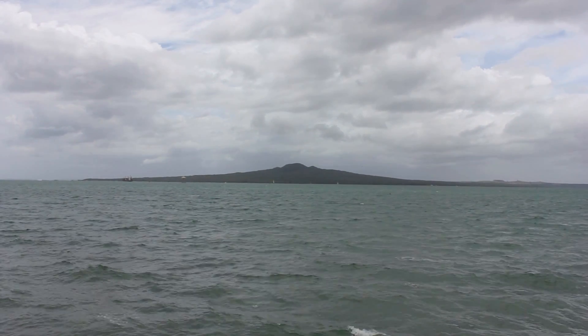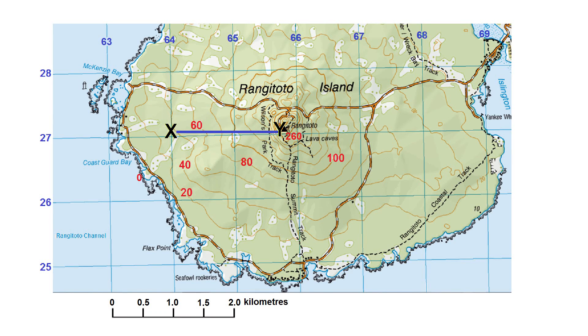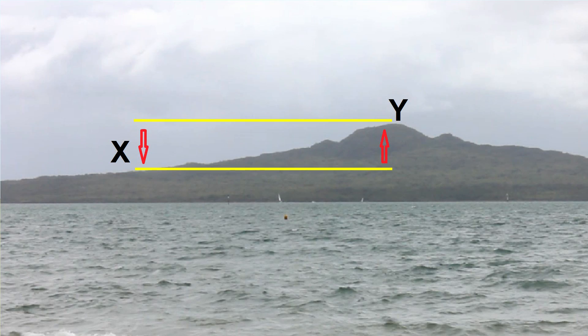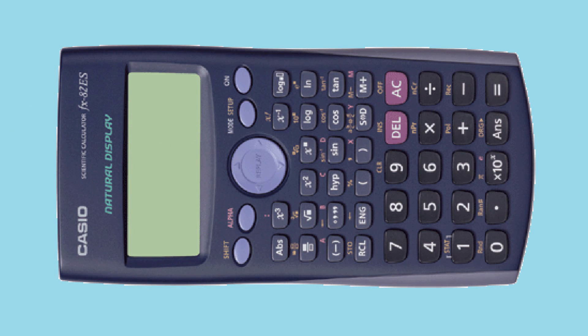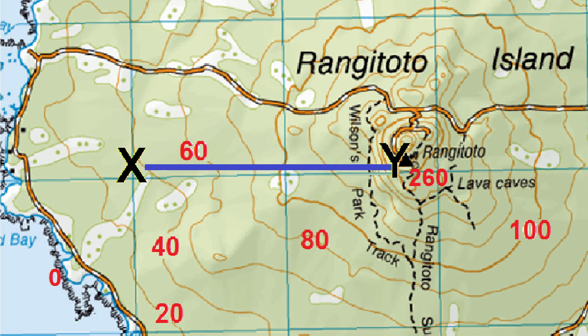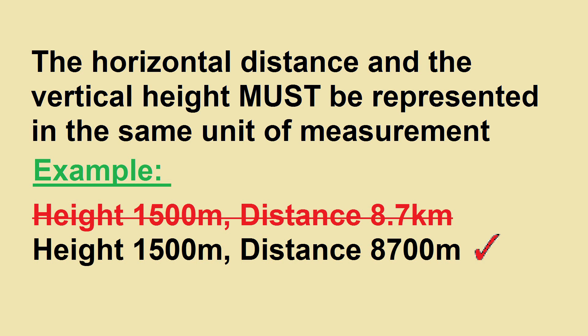There are two pieces of information needed to work out degrees. First, the horizontal distance between two points on a map, expressed in meters. Second, the difference in height between the lowest point and the highest point, also expressed in meters. I will also need a scientific calculator to do the calculations. One very important note is that the horizontal distance and height need to be expressed in the same unit of measurement — I'm going to use meters.